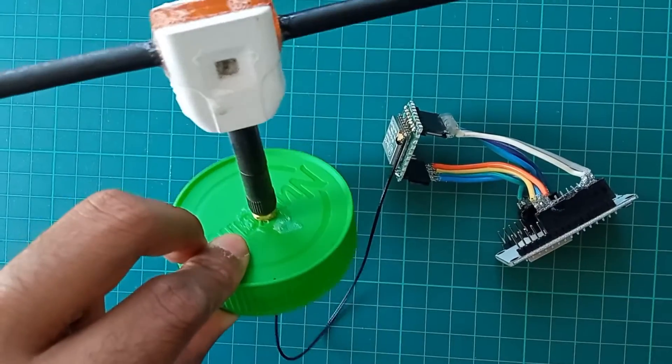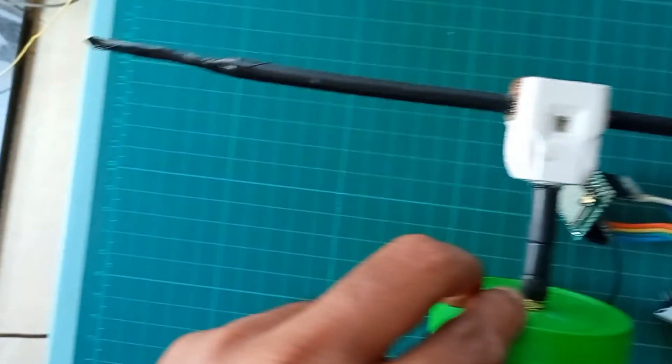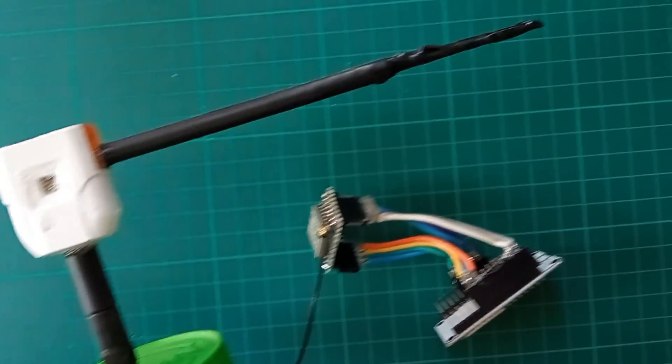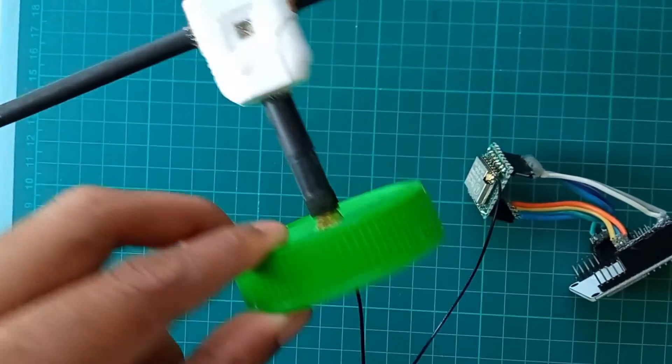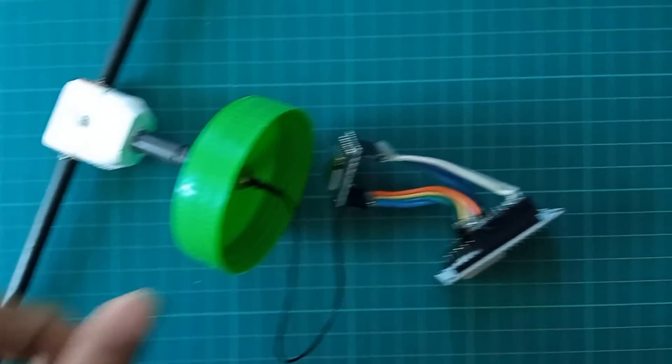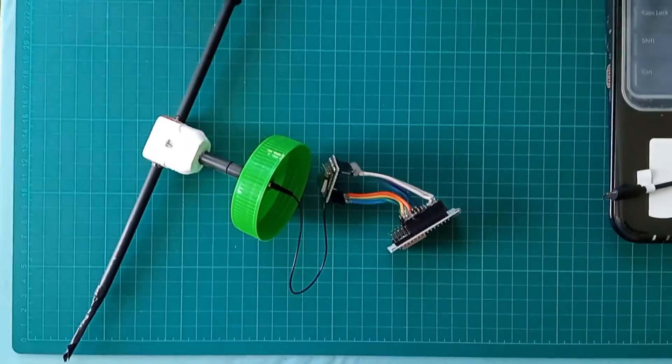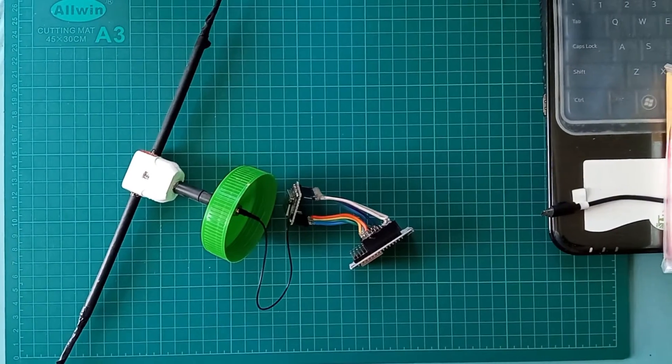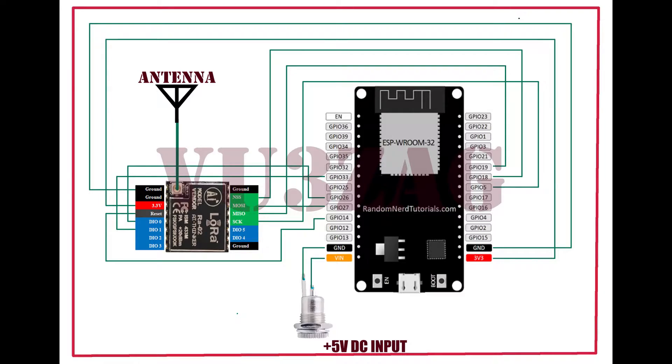We have used a bazooka dipole antenna to receive the satellite downlink signals. This is the connectivity diagram.